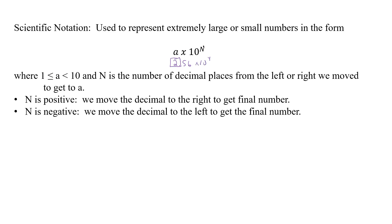The number n is basically the number of places that we move the decimal left or right to get to 'a'. With n being positive, we move our decimal to the right to get our final number. So if we have 2.56 times 10 to the fourth, we write out 2, 5, 6, 0, 0, 0, 0. Positive four means we move right four places: 1, 2, 3, 4. So the real number is 25,600. That's what 2.56 times 10 to the fourth represents.